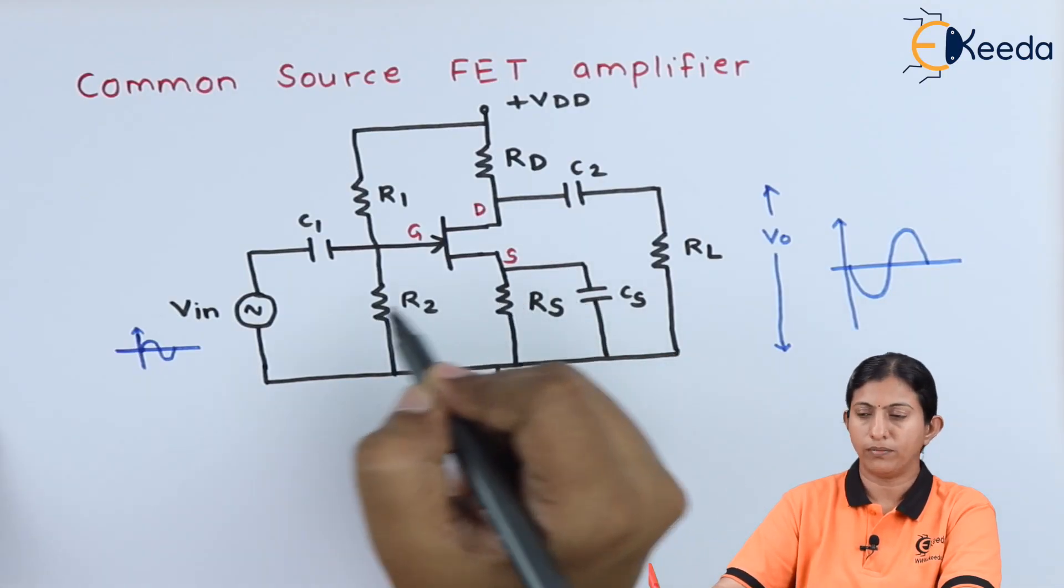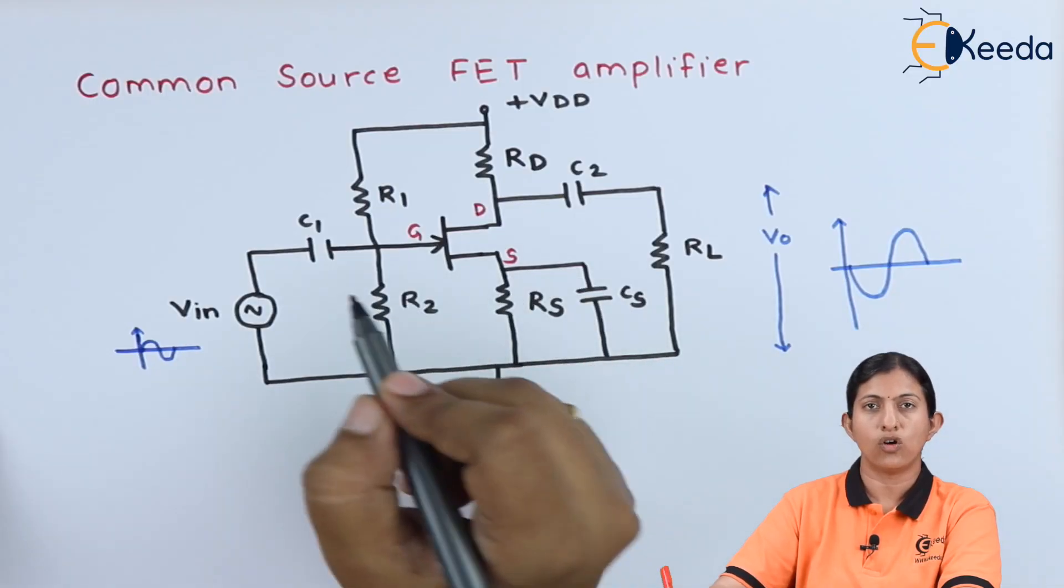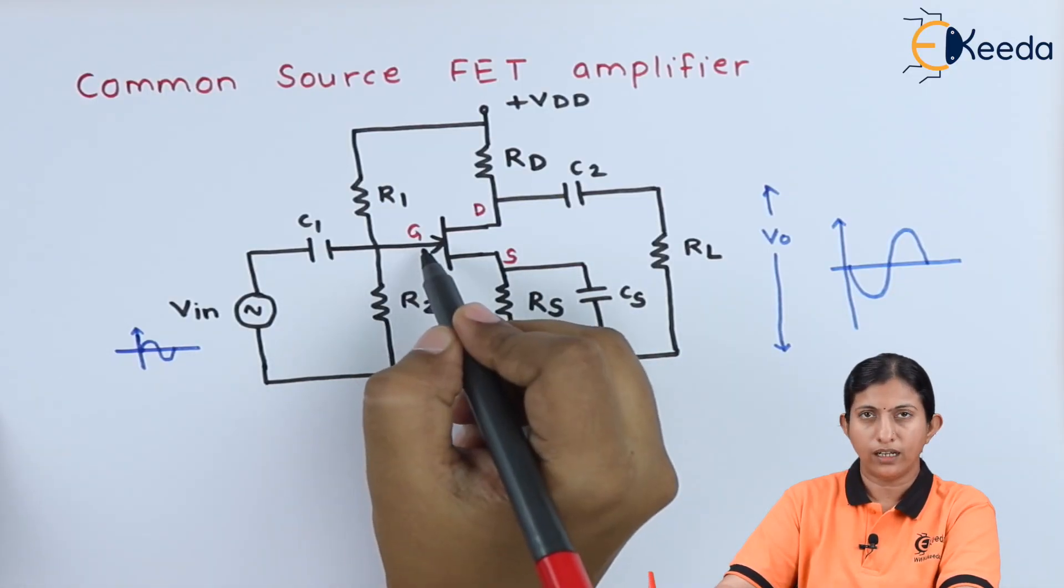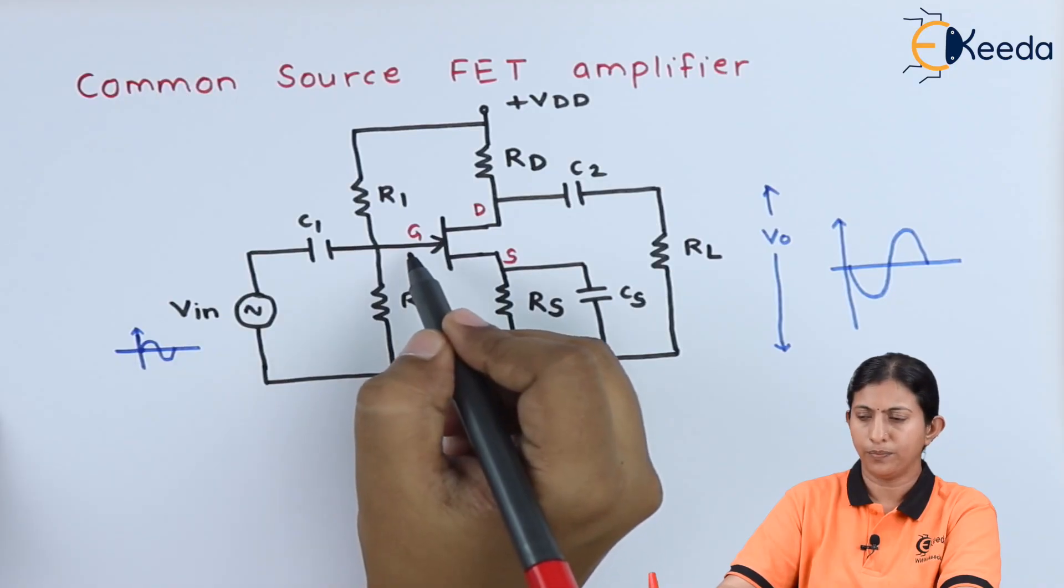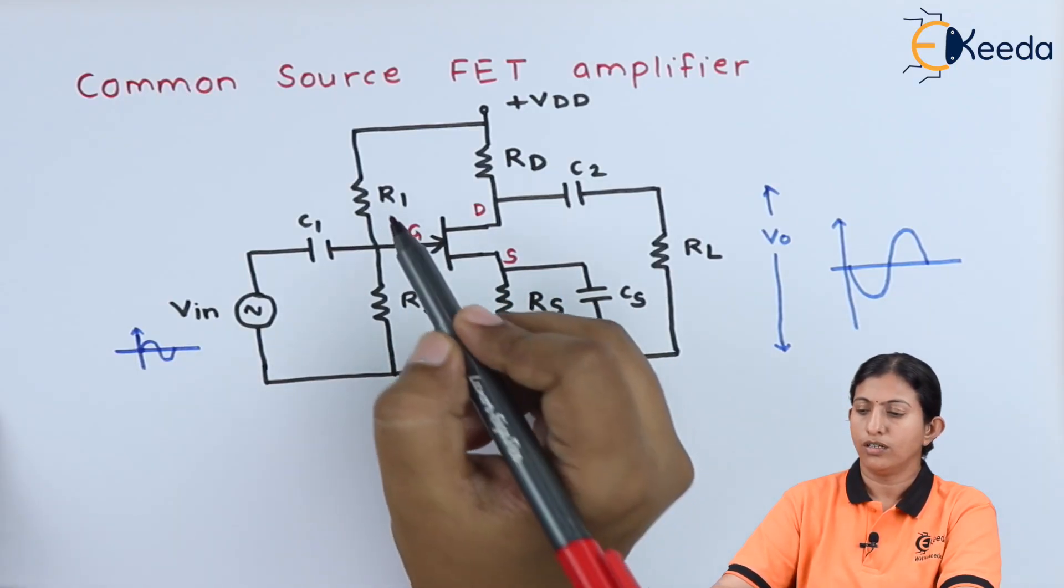The source terminal is common between the input and the output, hence this amplifier is called common source FET amplifier. To the gate terminal we are applying the input. We are using voltage divider biasing, that is R1,